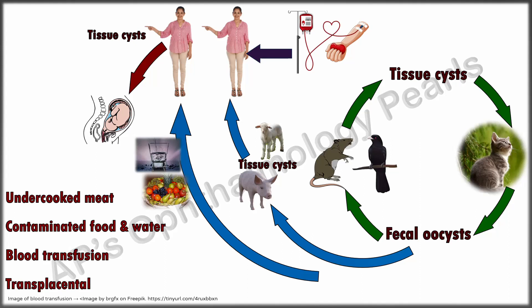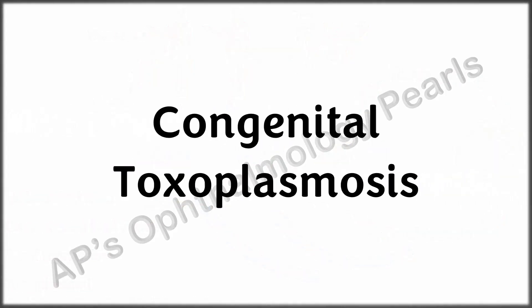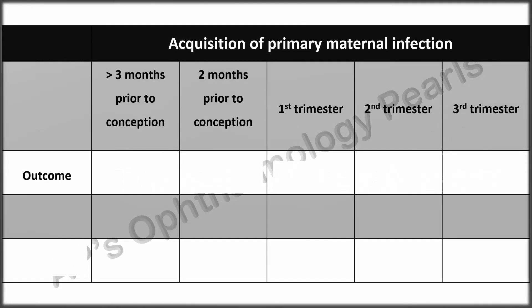Bradyzoites remain in tissue cysts in the brain, retina, and muscle for years, but tachyzoites can reemerge and cause toxoplasmosis in immunocompromised patients. Tachyzoites infiltrate the eye preferentially through the retinal microvasculature and can navigate across the retina.